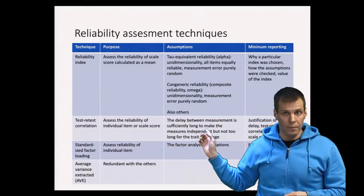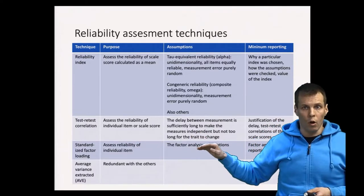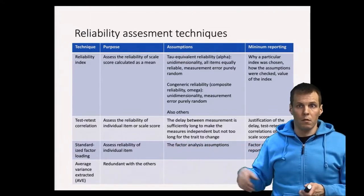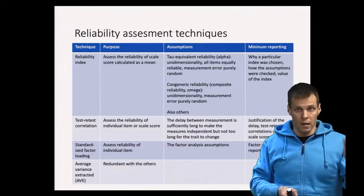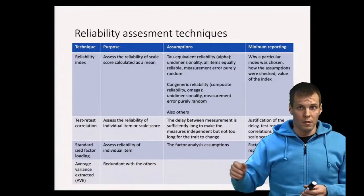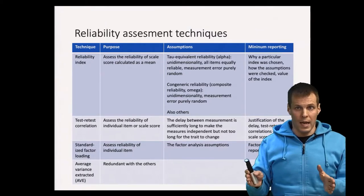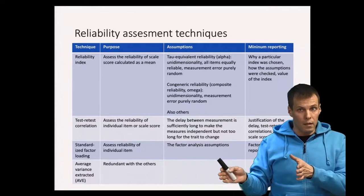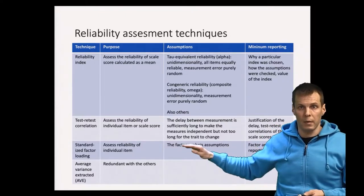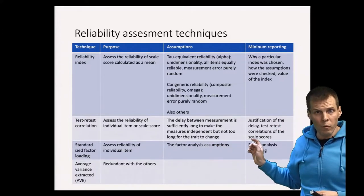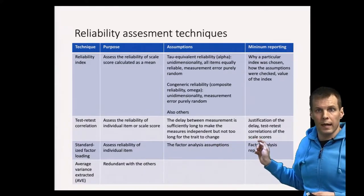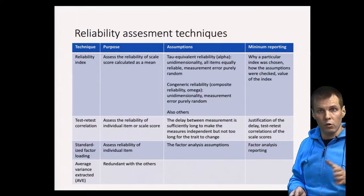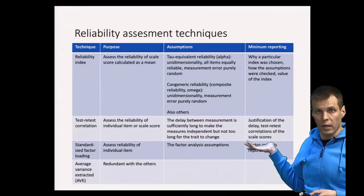That is the reason for the delay. Also, the delay must not be too long, so that the trait being measured remains relatively stable. For example, if you measure a child's height now and then two years later, the difference is not an indication of unreliability but rather that the child has grown. So the trait must be stable. For minimum reporting, justify the delay and report the actual test-retest correlations.